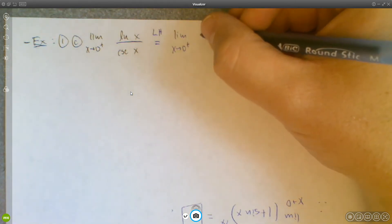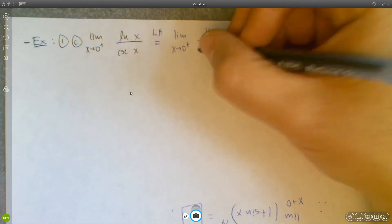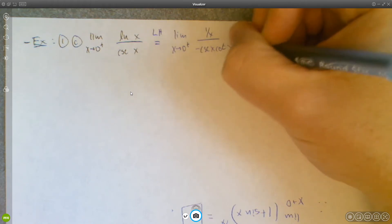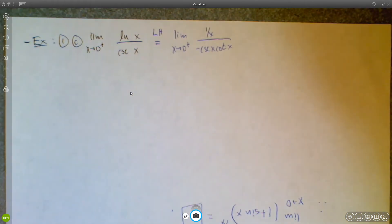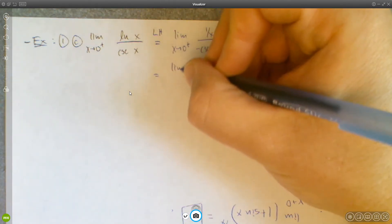When you do, derivative of ln of x is 1 over x. Derivative of cosecant x is negative cosecant cotangent. And then we can clean this up a little bit.